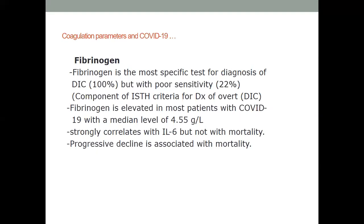Fibrinogen, as part of the acute phase reactant, is most specific for DIC diagnosis in conventional settings and is part of the ISTH criteria. It is elevated in most COVID-19 patients with a median level of 4.5, and it strongly correlates with disease severity. The problem with fibrinogen is that it is elevated acutely, but once it starts to drop, that is an ominous sign of bad outcome — so it doesn't really help in terms of making early treatment decisions.